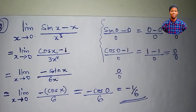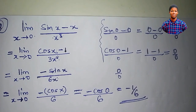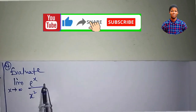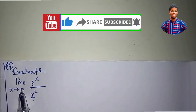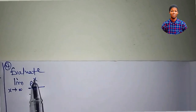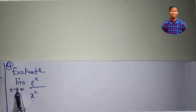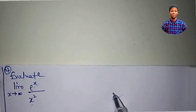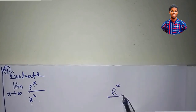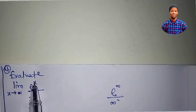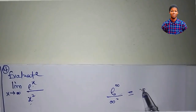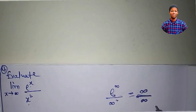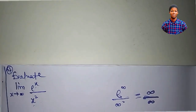Now let's apply L'Hôpital's rule to solve problems involving limits at infinity. What is the limit of e to the power of x all over x squared as x approaches infinity? Plugging in infinity yields e to the power of infinity over infinity squared — both are infinity — so this is an indeterminate form and L'Hôpital's rule will be applied.